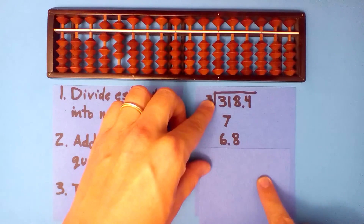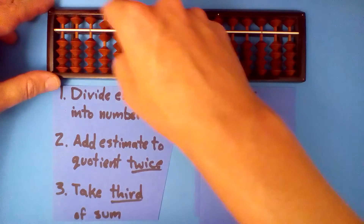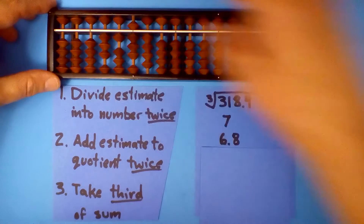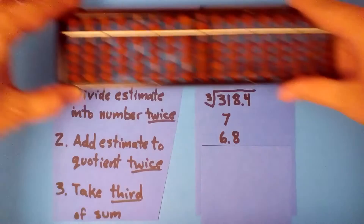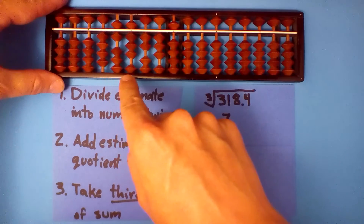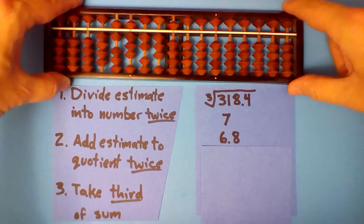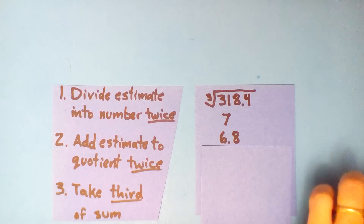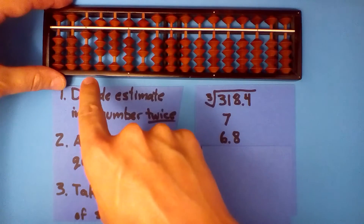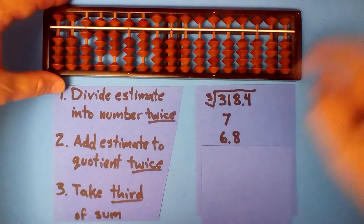So that's our improvement: 6.8. Now repeat this process — divide 6.8 into 318.4. Hopefully you got 46.8235. Repeat that — divide 6.8 into this number. Your next quotient should be 6.8858. Now add your estimate 6.8 to this twice and divide by 3.